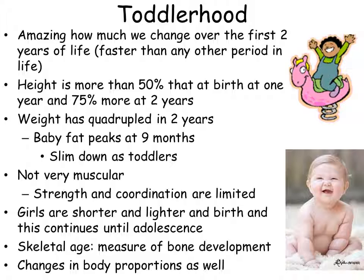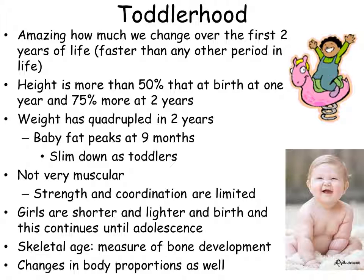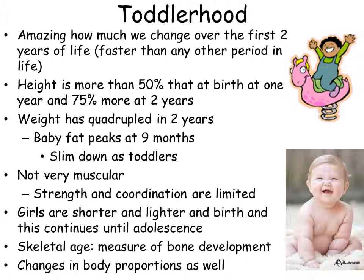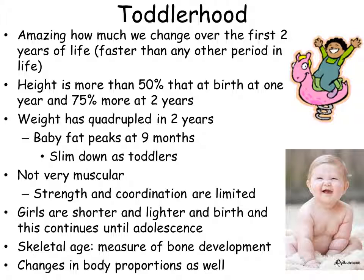We change more in toddlerhood than any other period in our lives. In the first two years, height increases by 50% of birth height by one year and 75% more by two years; weight quadruples in two years. Baby fat peaks at about nine months and then slims down as they become toddlers. They're not very muscular — strength and coordination are limited. Girls are shorter and lighter at birth, and this continues until adolescence. Skeletal age measures bone development, used for example to estimate age from a skeleton. There are also changes in body proportions.